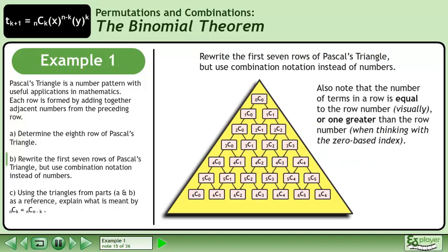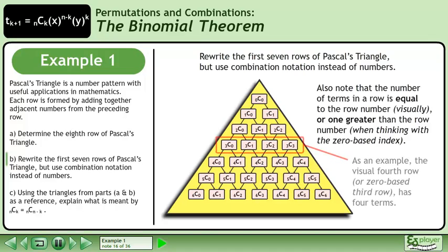Also note that the number of terms in a row is equal to the row number visually, or one greater than the row number when thinking with a zero-based index. As an example, the visual fourth row, or zero-based third row, has four terms.